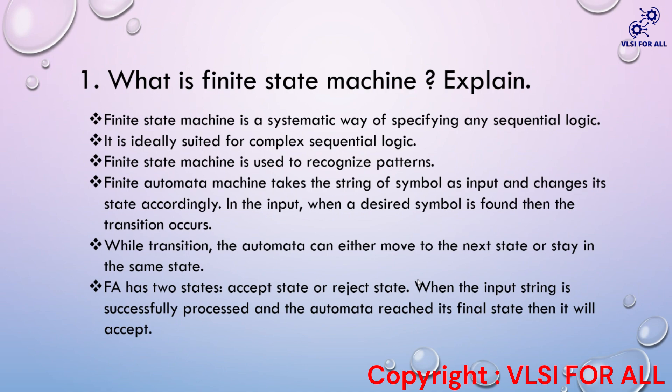The first question is: what is a finite state machine? A finite state machine is defined as a systematic way of specifying any sequential logic. We use finite state machines when we have complex sequential logic, and they are used to recognize patterns. An FSM automatically takes a string of symbols as input and changes its state accordingly. While having a transition, the automata can either move to the next state or stay in the same state — it can either accept or reject the state. When the input string is successfully processed and the automata reaches its final state, it will accept.